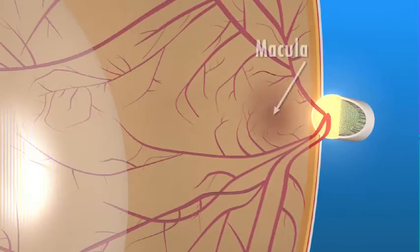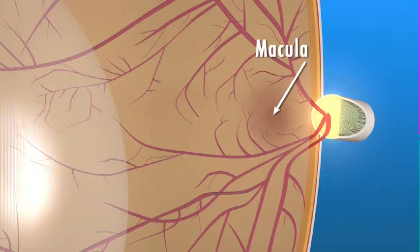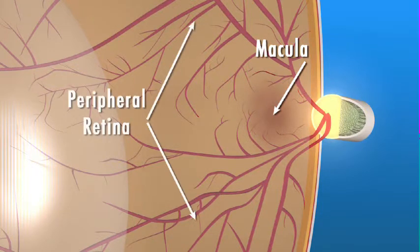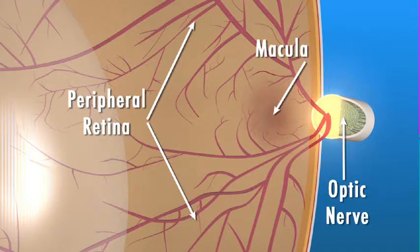The macula is a very small area at the center of the retina that gives us our fine pinpoint central vision. The area of retina surrounding the macula gives us our peripheral or side vision. The retina converts the light rays into signals that are sent through the optic nerve to the brain.